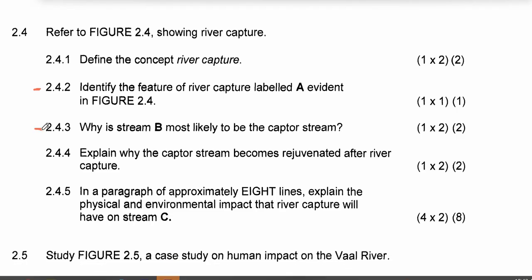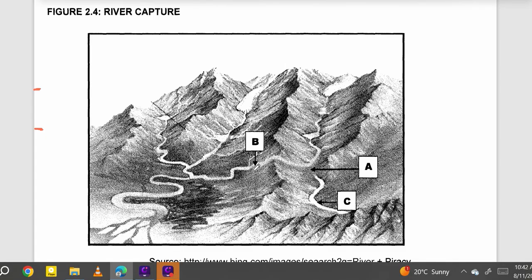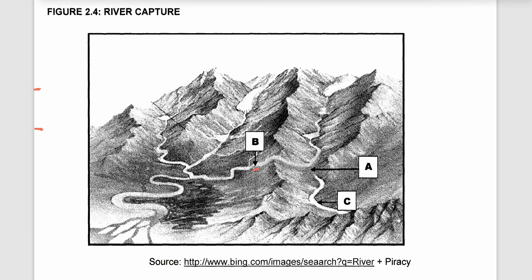Question 2.4.3 says: why is stream B most likely to be the capture stream? Stream B is likely the capture stream because it has originated from its source and invaded or eroded through the watershed into the other river. You can say river B eroded through the watershed — that's number one. Number two, river B is the one that has much volume of water and the potential to erode.